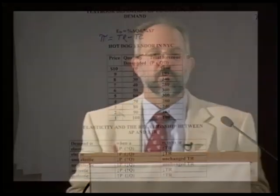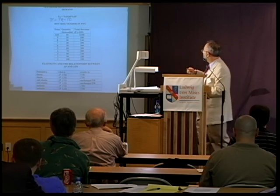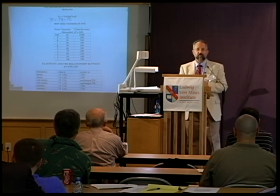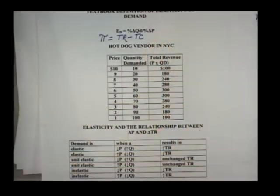He will sell at a price of $6 or above in the elastic range. Because above $6, as he increases his price, his total revenue drops. He doesn't want to maximize total revenue but rather maximize the greatest gap between his outlays — total cost — and his total revenue.